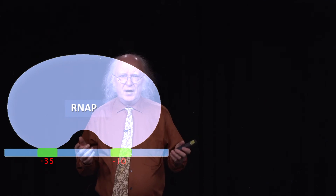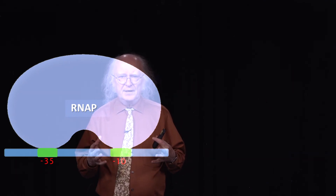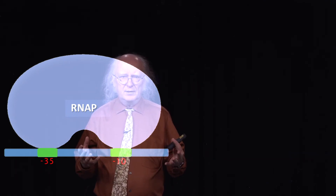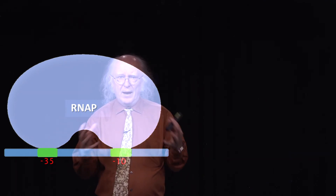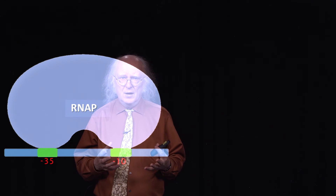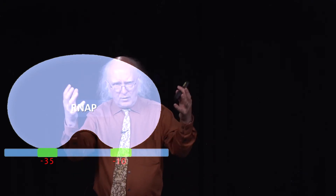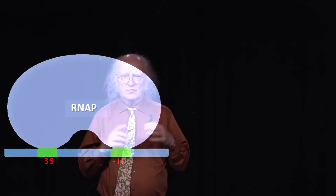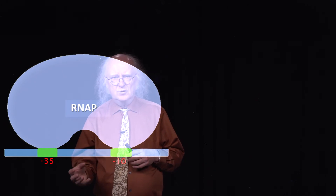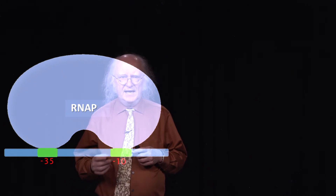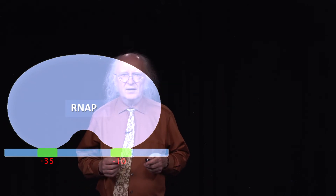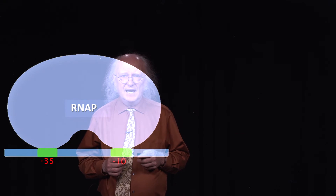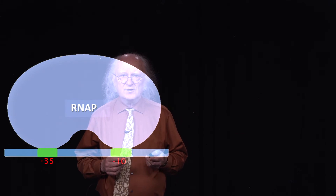During the process of transcription, the RNA polymerase, which is bound to sigma, will help the rest of the RNA polymerase to recognize and bind to these minus 10 and minus 35 sequences in the DNA so that transcription can begin.